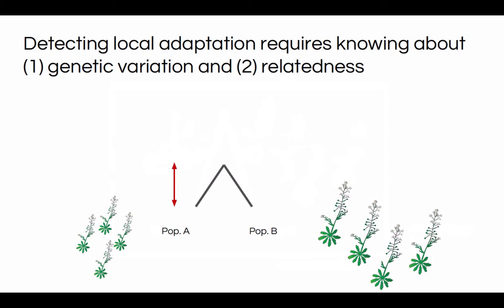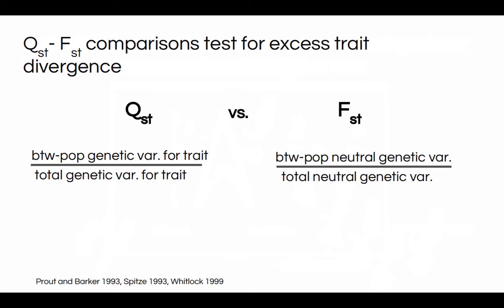One way that all of this information has been combined is in QST-FST approaches. QST is essentially a measure of how much of the genetic variation for a trait within a species is partitioned between different populations, and FST is an analogous measure based on neutral genetic divergence. The idea behind a QST-FST test is you're testing for more divergence between populations than you expect based on neutral genetic variation.